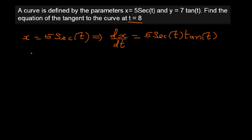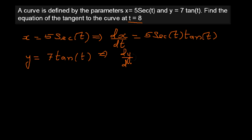And y is given as 7 tan t. The derivative of tan is sec squared t, so dy/dt is equal to 7 sec squared t.